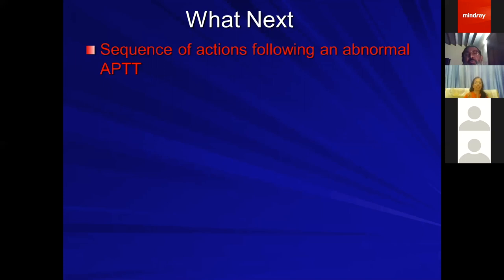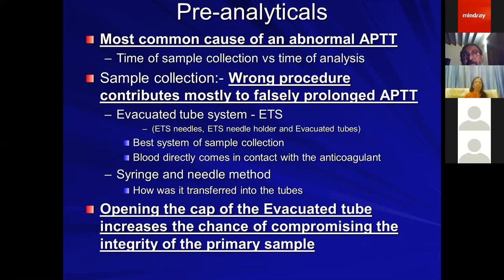When a prolonged APTT is found in the lab, we first check whether the sample was collected properly, because one of the most common causes of a prolonged APTT is a bad sample collection. We look at the time of collection versus time of analysis, and whether the wrong collection procedure was followed.